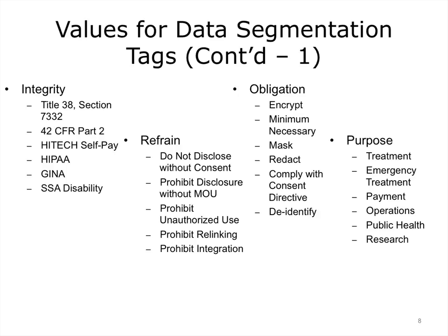There are more values for data segmentation tags. The integrity of the data — what applies to that? Whether or not you can disclose the data without consent, or you can't relink to it. How do you have to handle the data? Must you encrypt it? Is it subject to the minimum necessary requirement, and what's the purpose of this data? Is it public health? Is it operations? Is it treatment? Is it actively needed for important purposes, and we need to let that data go through?